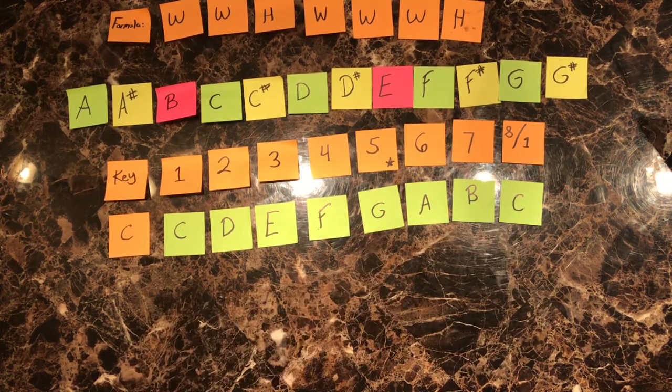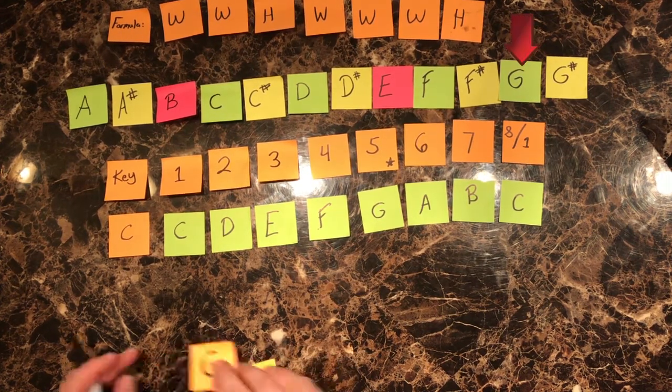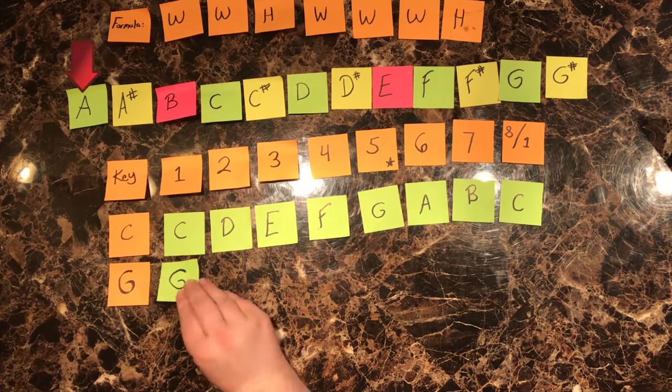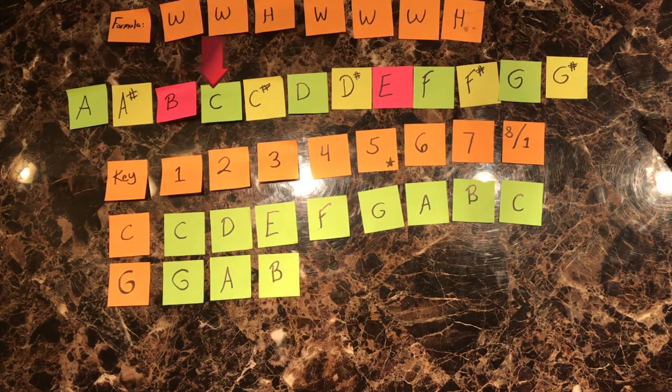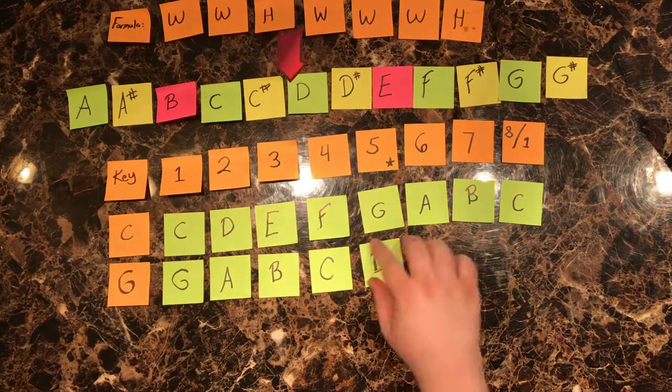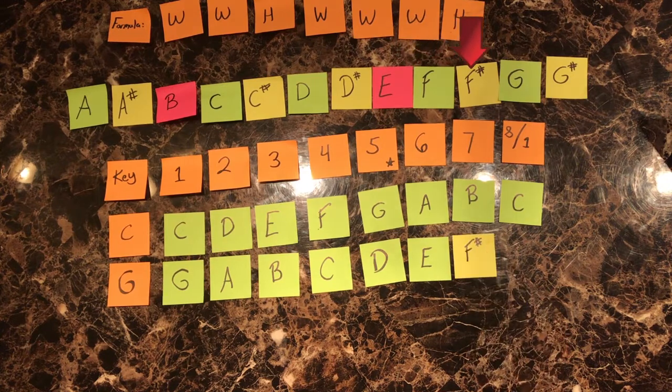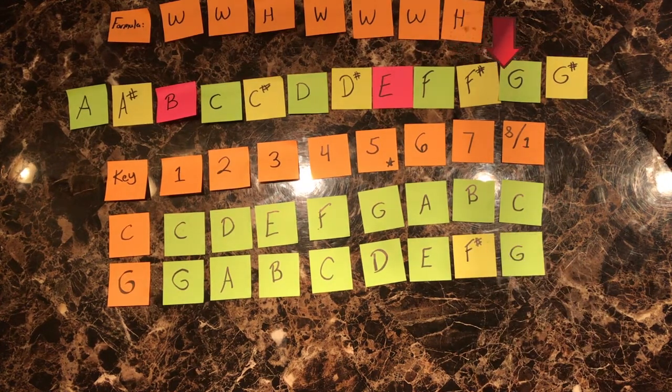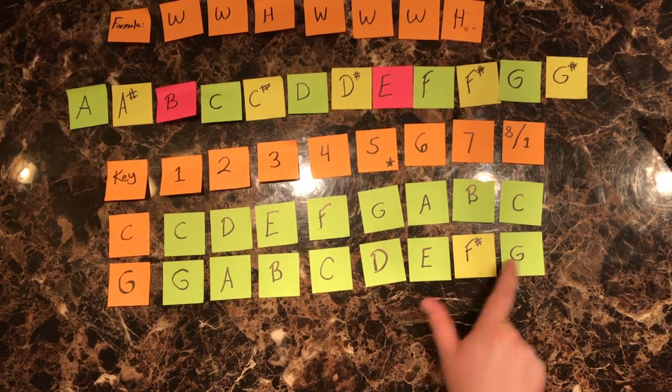The fifth note of our key is the next key that we will learn, as it only changes by one note from the last key. Starting on G, we move a whole step to A. From A, we move a whole step to B. From B, we move a half step to C. From C, we move a whole step to D. From D, we move a whole step to E. From E, we move a whole step to F sharp. From F sharp, we move a half step to G. G, A, B, C, D, E, F sharp, G.